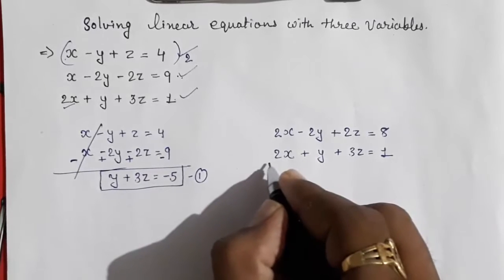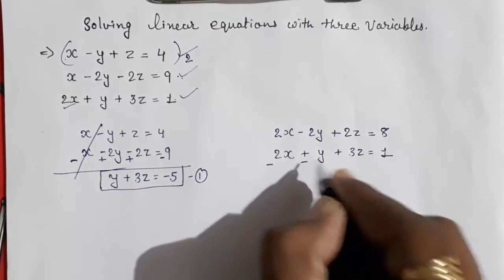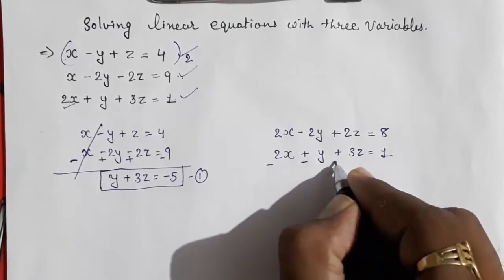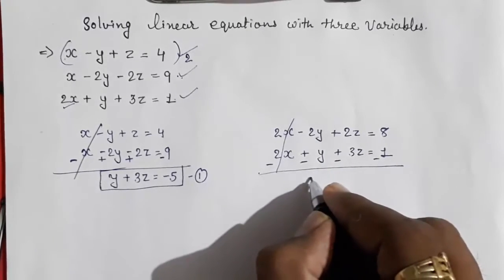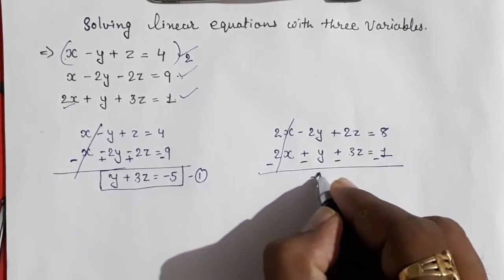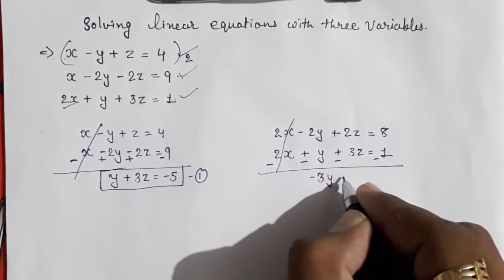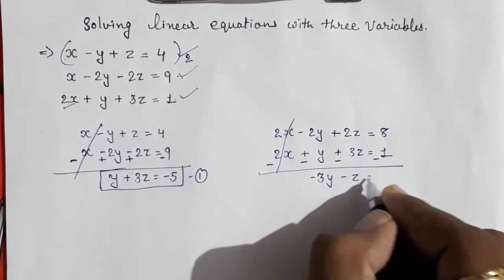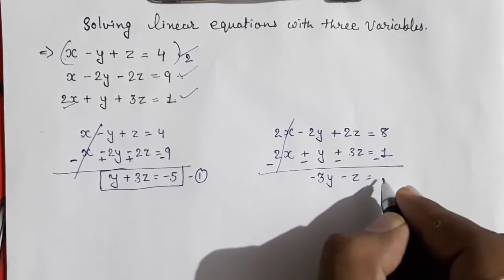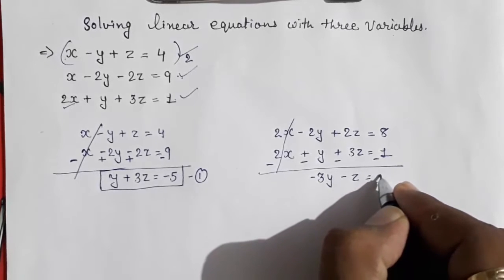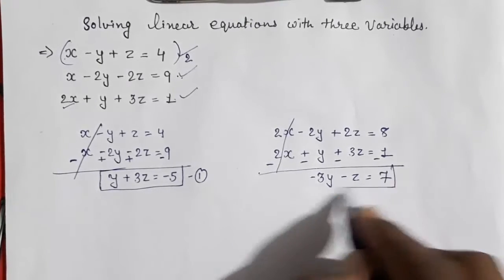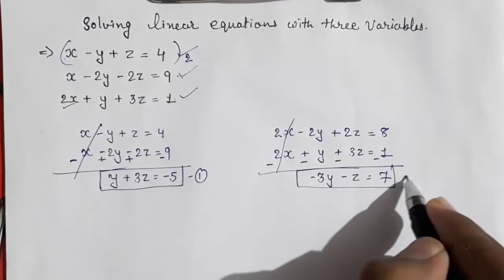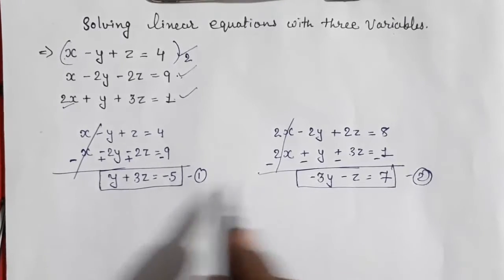Subtracting, all signs will be changed. The x terms cancel directly, and we get minus 3y minus z equals 8 minus 1, which is 7. This is our second equation with two variables.